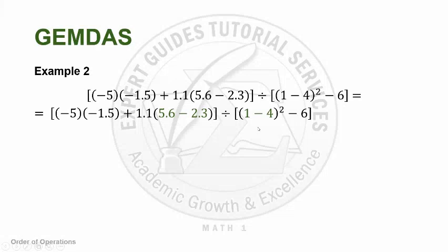Notice also the difference from our prior example. In the first example, we performed 2 squared immediately because only one term, 2, was raised to the exponent. Here, both 1 and negative 4 are raised to 2. So we need to perform 1 minus 4 first before raising to 2, because two terms are raised to the exponent.